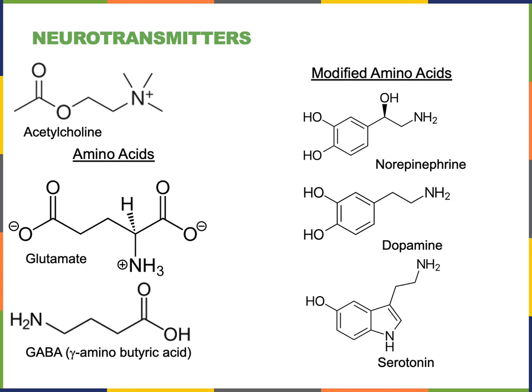Serotonin is produced from the amino acid tryptophan. It has an important function in the central nervous system as a modulator of neuronal activity and has a significant influence on mood. We have learned about serotonin's profound influence on mood through medications used to treat depression known as selective serotonin reuptake inhibitors (SSRIs). These drugs inhibit serotonin reuptake transporters, increasing the concentration of serotonin in the synapse, which increases positive mood and is an effective treatment for depression.